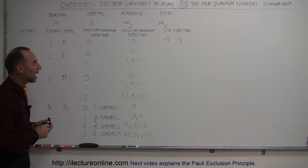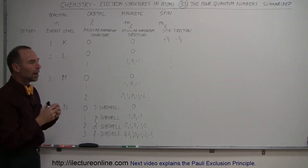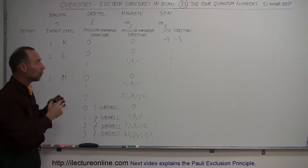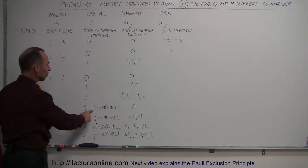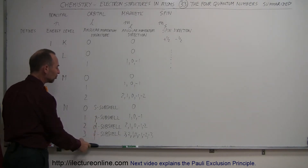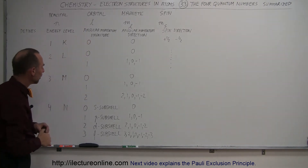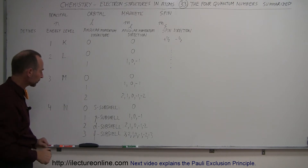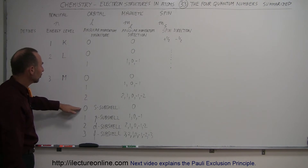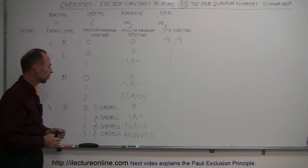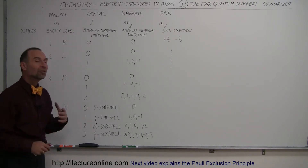Within those shells, we have regions that are defined by the angular momentum magnitude. So depending upon what kind of angular momentum they have, the electrons will reside in each shell in a sub-shell. We have different sub-shells: the S sub-shell, the P sub-shell, the D sub-shell, and the F sub-shell, defined by the value we place on the orbital quantum number — zero, one, two, three, and so forth. For orbital quantum number equal to zero, we talk about the S sub-shell, which is a spherical sub-shell. When the orbital angular momentum quantum number equals one, we talk about the P sub-shell, and so forth.